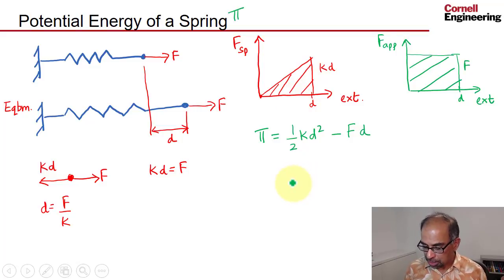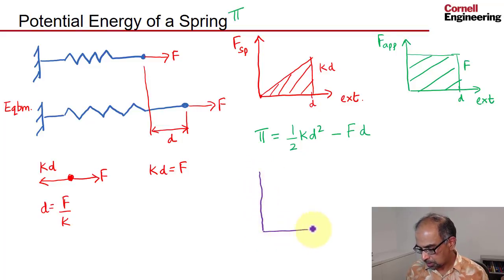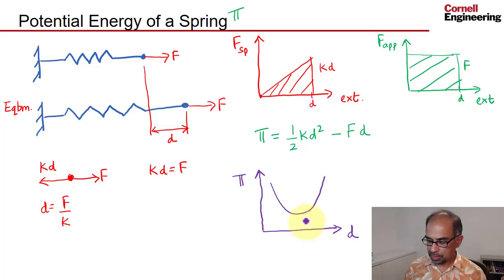We love these plots, don't we? So if I do another plot of π, the potential energy, versus the extension, you'll get a parabola. Where the potential energy is minimum, that's the equilibrium position.